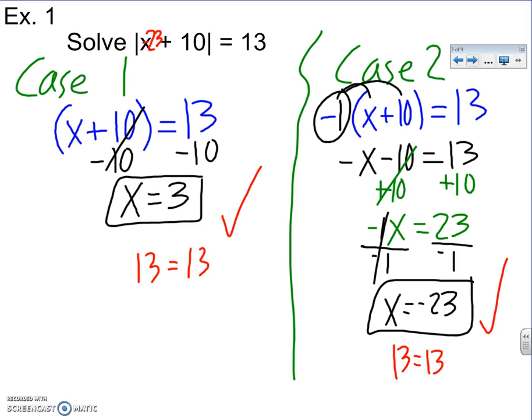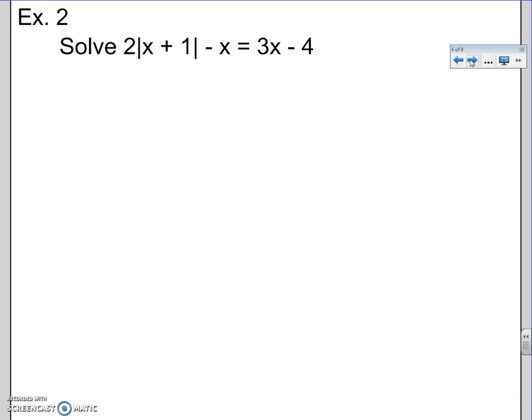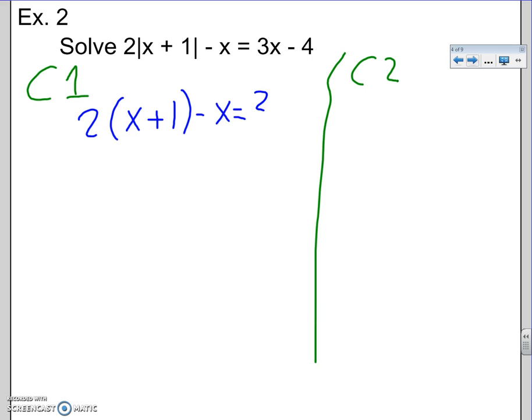There's always going to be two numbers. We need to check them. Either both of them work, one of them works, or neither of them works. So let's try another one. Same idea. I see absolute value, two cases. The first case is positive, so I just turn the absolute value sign to parentheses. The second case is negative. I put a negative in front of that parentheses.